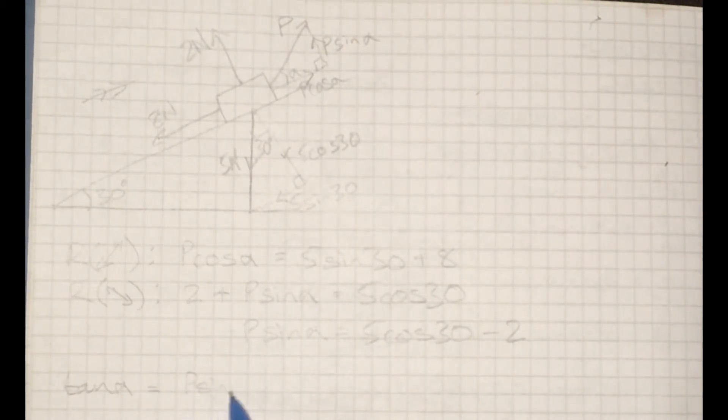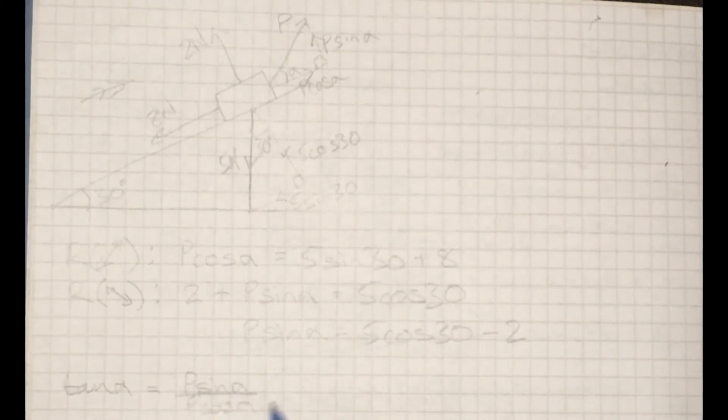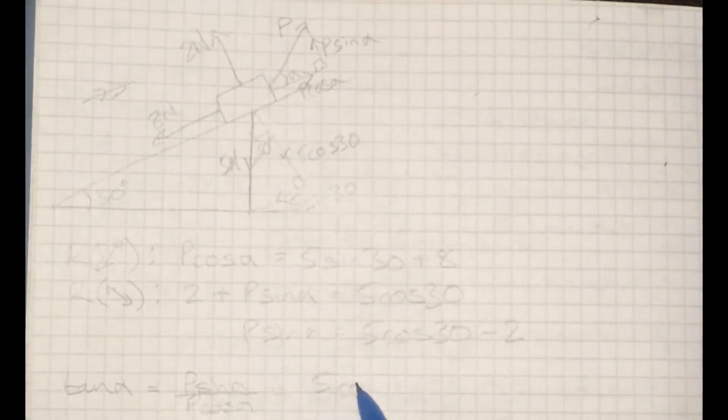So tan alpha is going to be P sine alpha over P cosine alpha. The P's will cancel out, and I'm just going to write in the fraction.